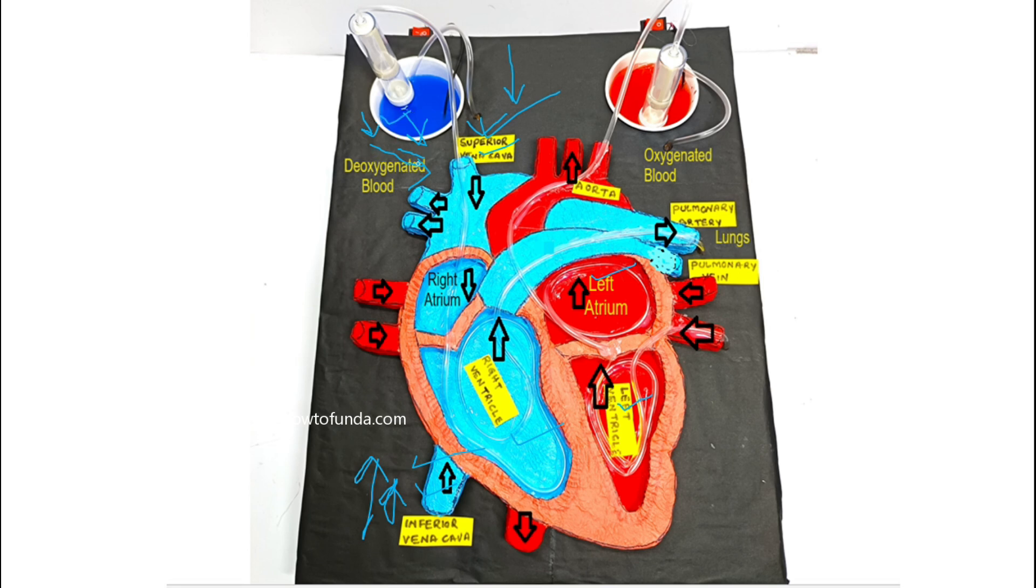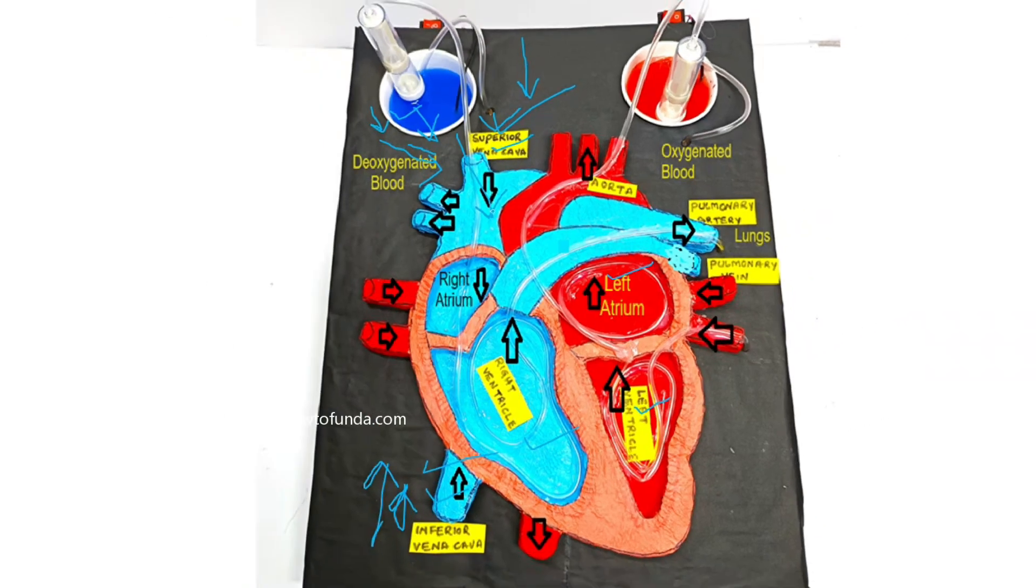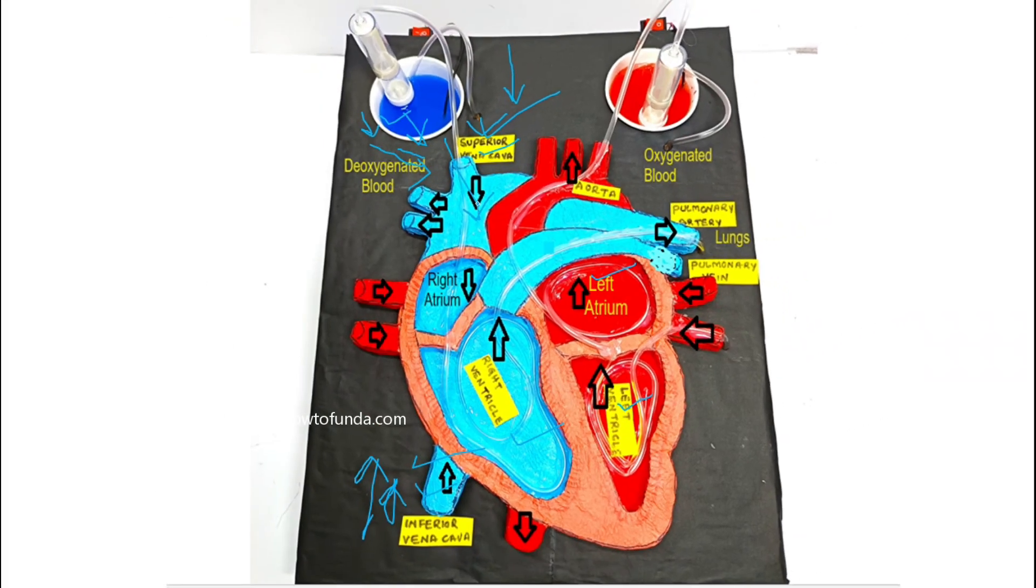The deoxygenated blood is coming from the various parts of the body via superior or inferior vena cava. When that blood comes from deoxygenated blood to the heart, first it goes to right atrium.